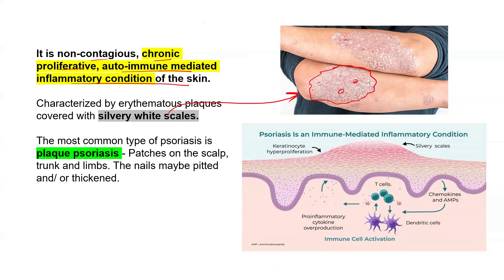What exactly happens is there is some sort of an injury or trauma which causes activation of your dendritic cells. This further leads to activation of your T-cells — these are the key cells of this disease — which causes overproduction of your cytokines. These pro-inflammatory cytokines lead to sustained inflammation in the skin.